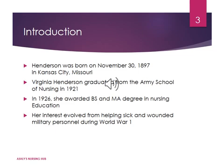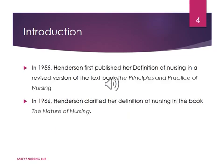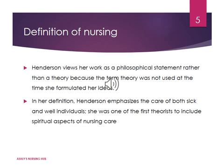First, let's see the basic introduction about Virginia Henderson. Henderson was born on November 30, 1897 in Kansas City, Missouri. Virginia Henderson graduated from Army School of Nursing in 1921. In 1926 she was awarded BS and MA degrees in nursing education. Her interest evolved from helping sick and wounded military personnel during World War One. In 1955, Henderson first published her definition of nursing in a revised version of the textbook 'Principles and Practice of Nursing.' In 1966 she clarified her definition in the book 'The Nature of Nursing,' and she died in March 1996.